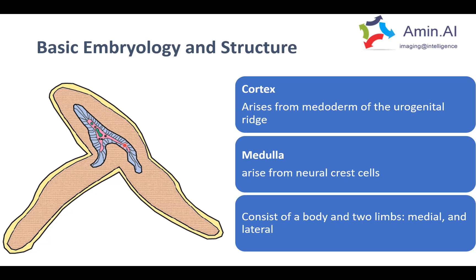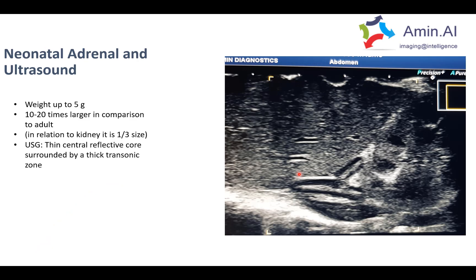The adrenal gland consists of three parts: the body and two limbs — the medial and the lateral limb. In a neonate, it is a relatively large structure compared to its adult size. The adrenal gland is 10 to 20 times larger in neonatal patients and is almost one third the size of the kidney.